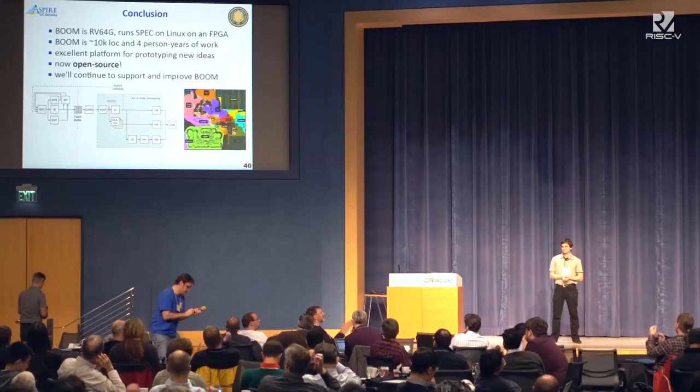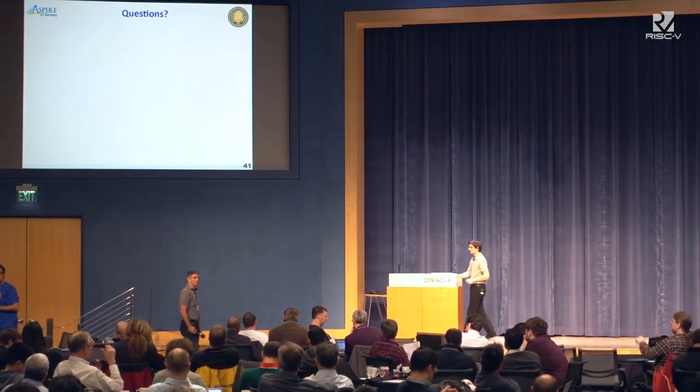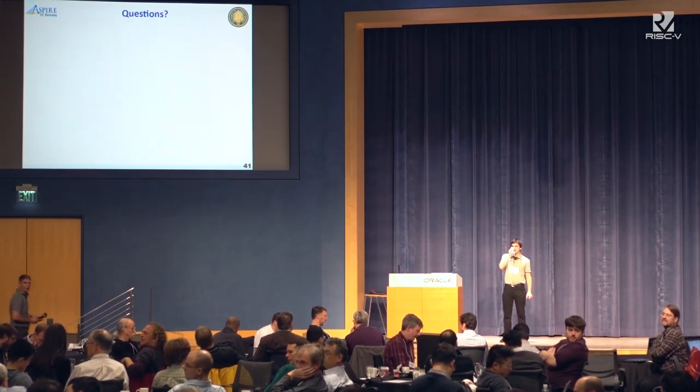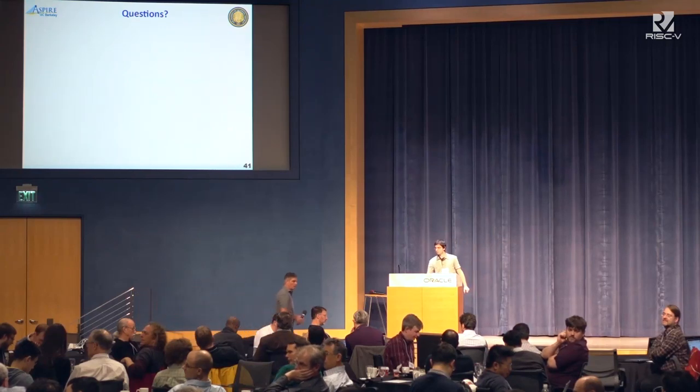In Q&A, someone asked about the Chisel 3 timeline. Chris noted he's not a Chisel dev and suggested contacting Jonathan Bacharach. Jonathan then said they're targeting a beta/alpha release end of this month or next month — a good chunk of RocketChip is running, they're doing a mock tape-out, and they'll be announcing it shortly. Anyone wanting to follow along can join the Chisel users mailing list on Google.